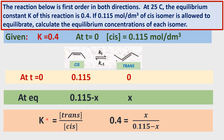According to the law of mass action, the equilibrium constant is equal to product concentration divided by reactant concentration. The product is trans and the reactant is CIS. Therefore, on substituting the values: K is equal to 0.4, trans isomer concentration at equilibrium is X, and CIS isomer concentration at equilibrium is 0.115 minus X.